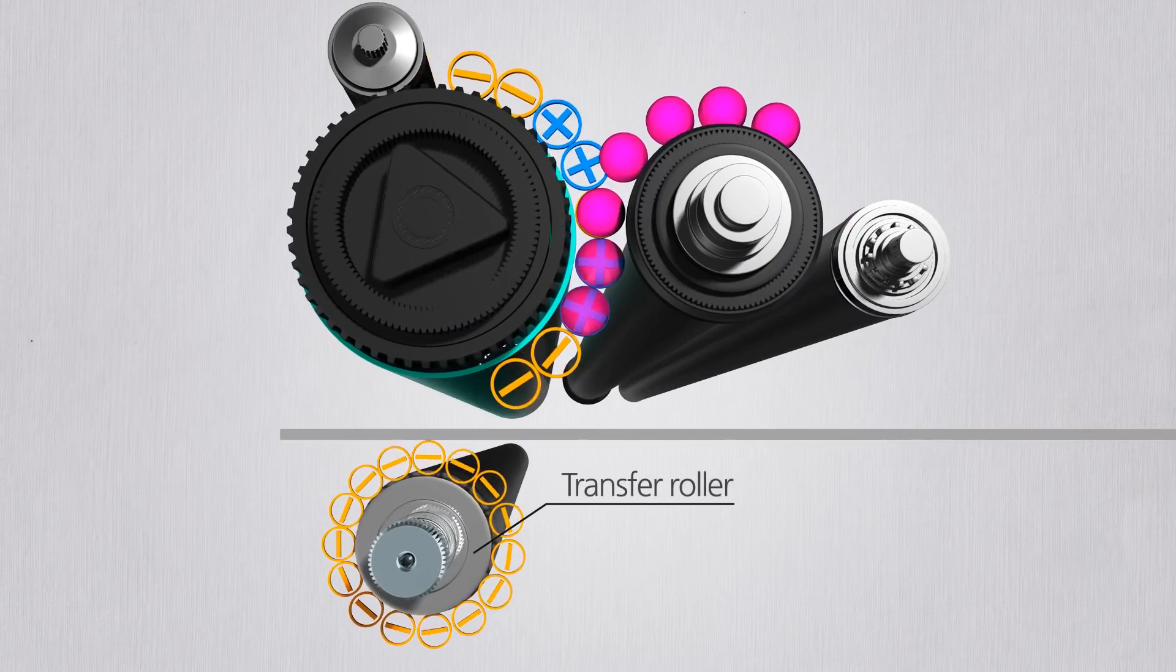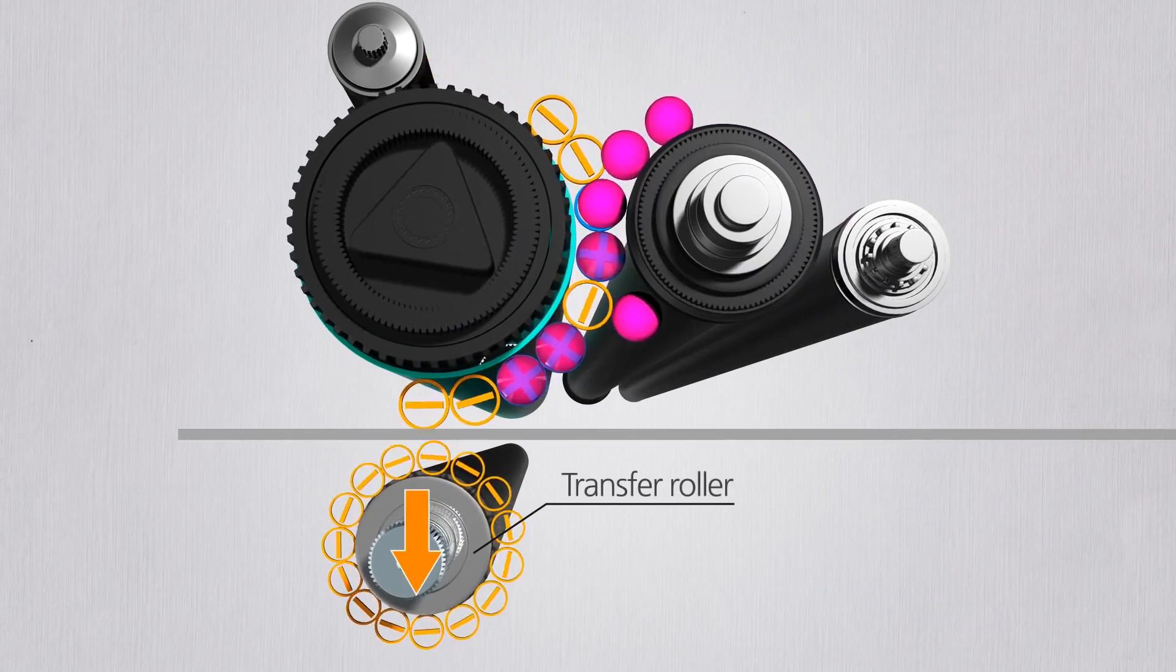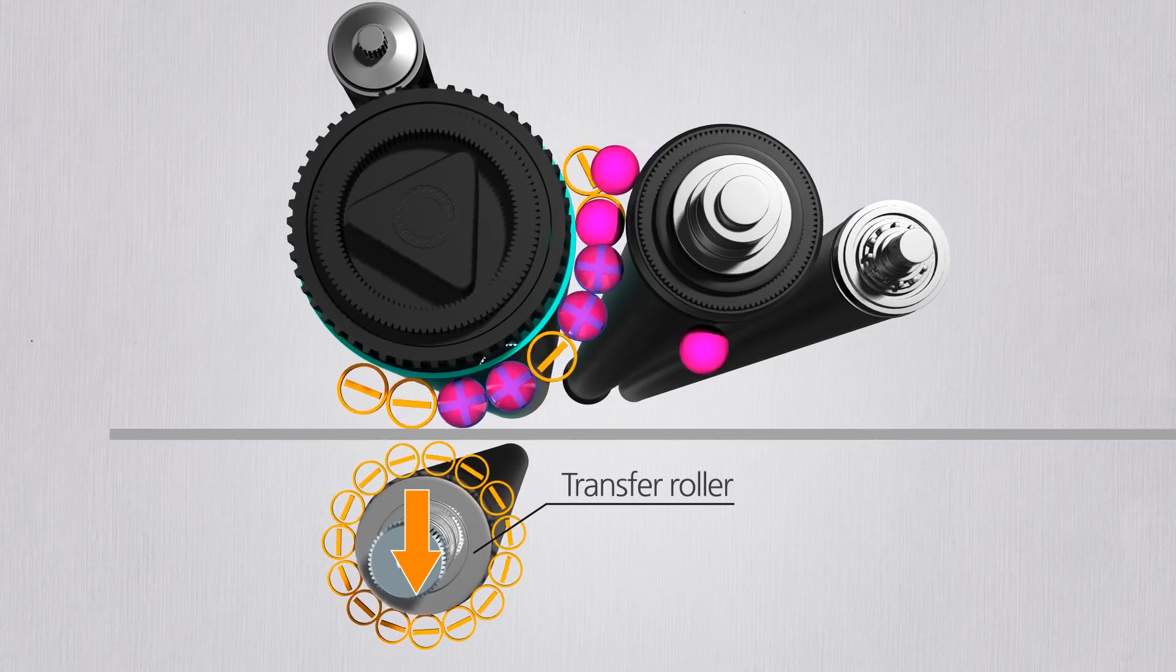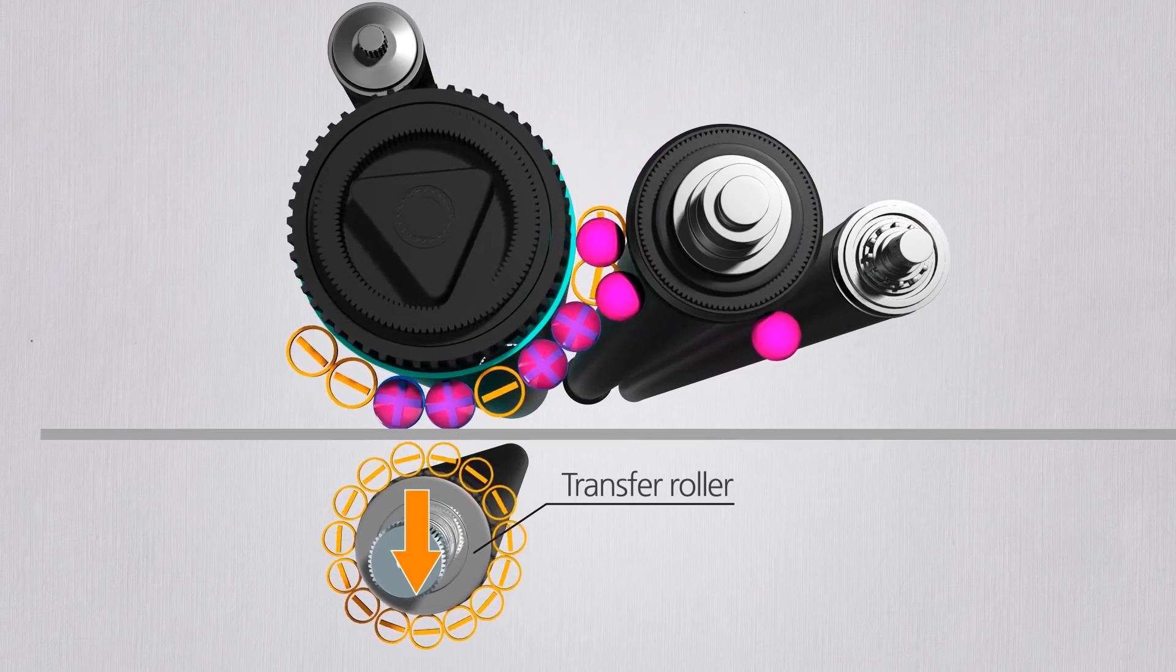Underneath lies the transfer roller. The transfer roller pulls down the toner strongly with the negative charge, which allows the toners to be attached to the paper.